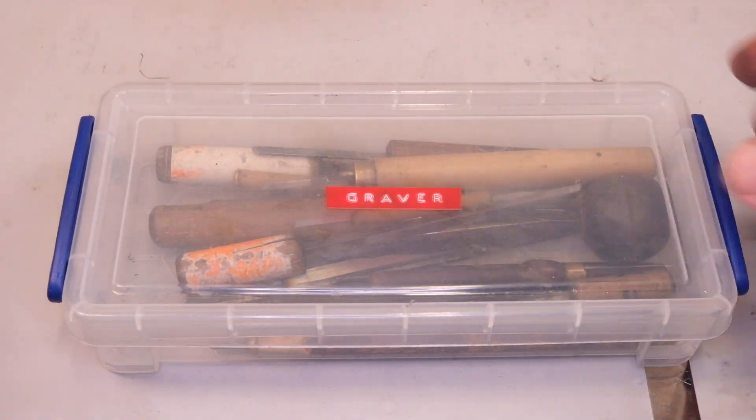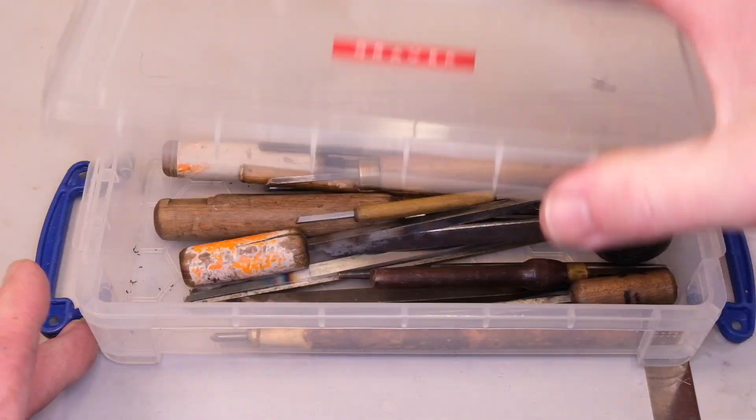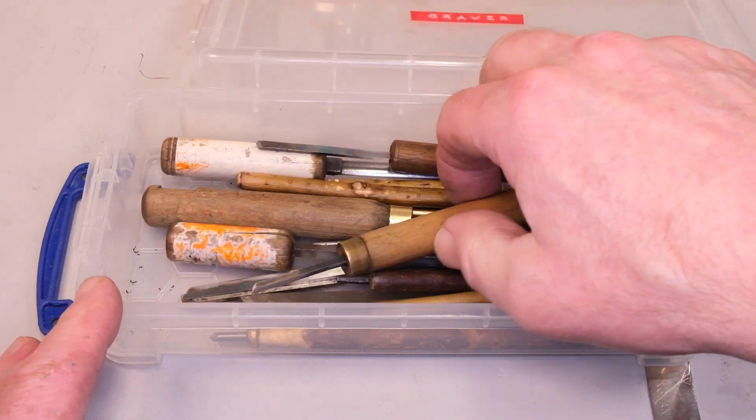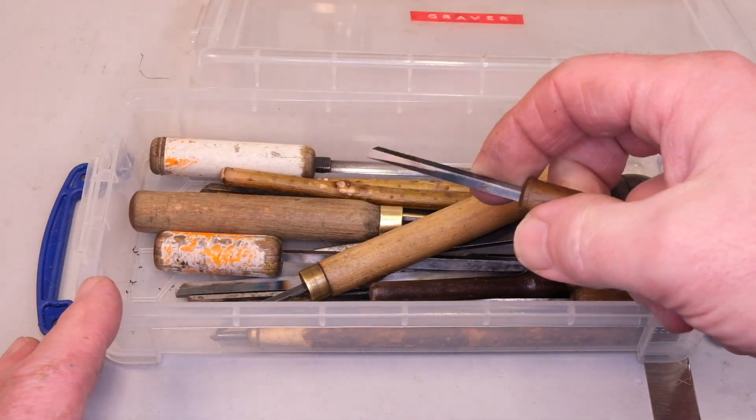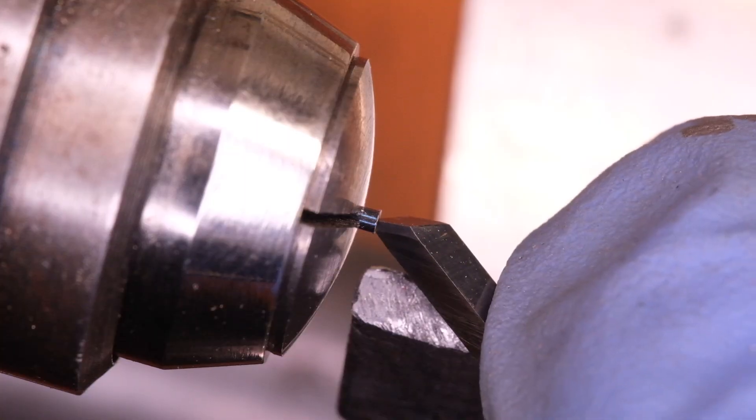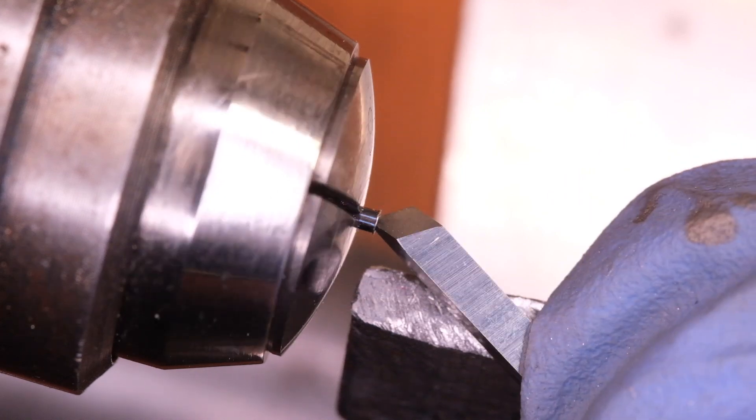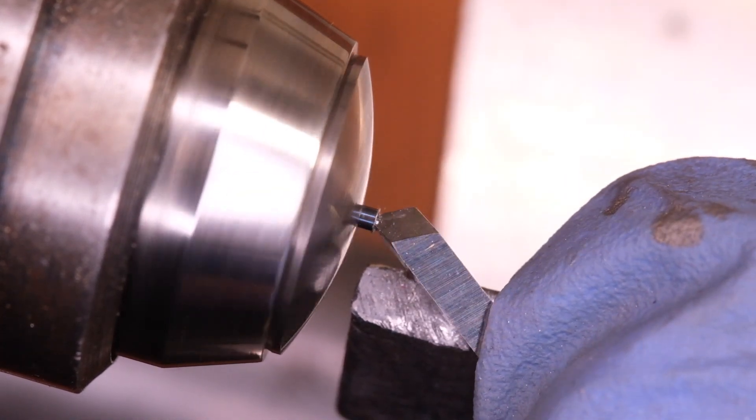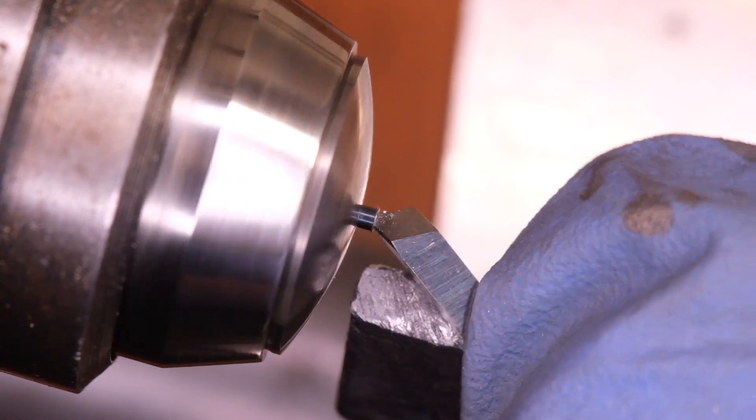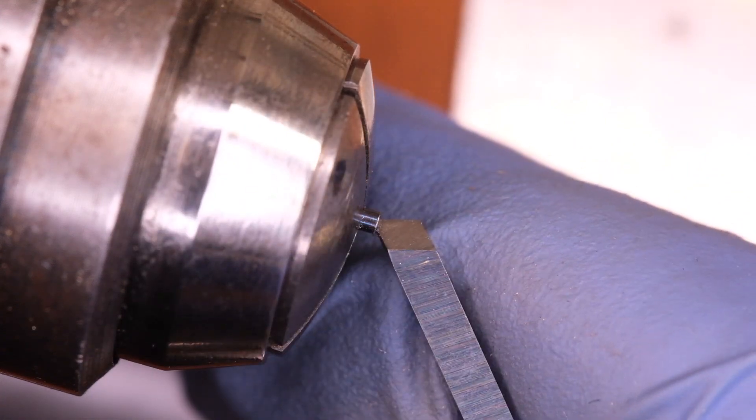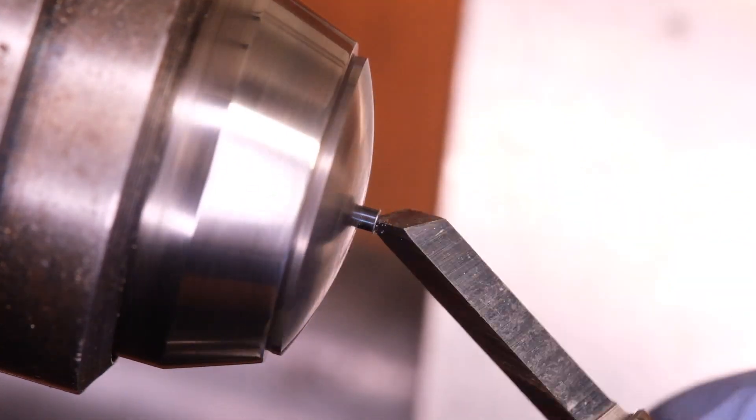So once I've done that, I turn my attention to the blued pivot steel. On this we want a concave cone or a female end on it, and I do this in the watchmakers lathe, but using a tungsten carbide graver.